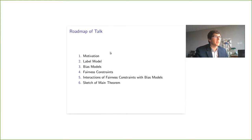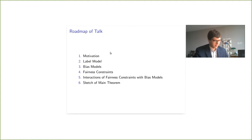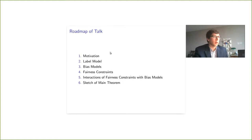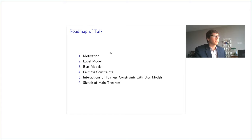So this is the roadmap of the talk. I'm going to talk a little bit more about motivation. We're going to talk about the label model — how the true labels are generated, how bias enters the dataset. We're going to talk about some fairness constraints and then how those fairness constraints interact with the bias models, and I'm going to sketch our main theorem. I encourage you to read our paper on arXiv or the conference version; they're basically equivalent.